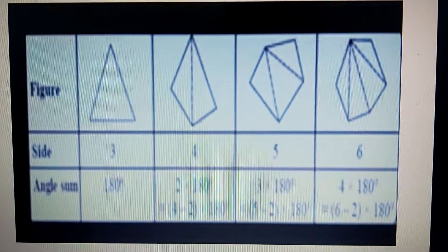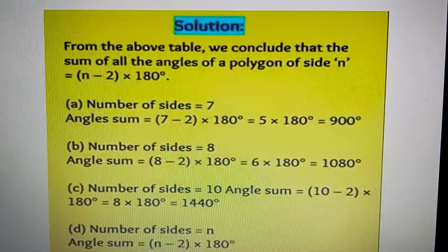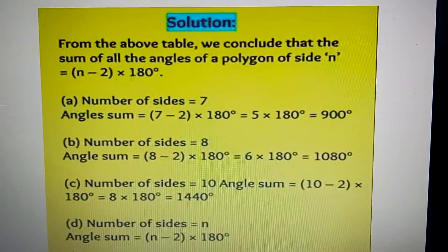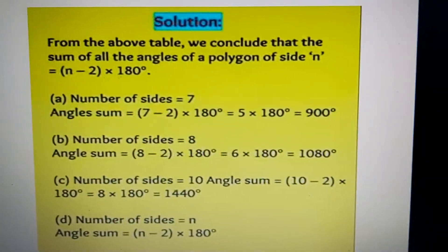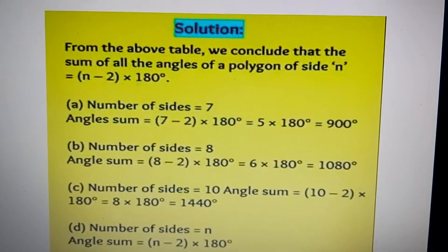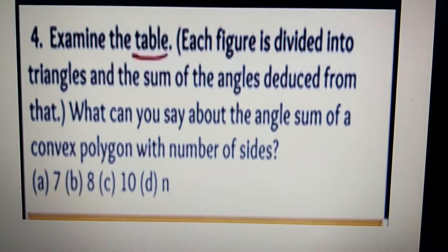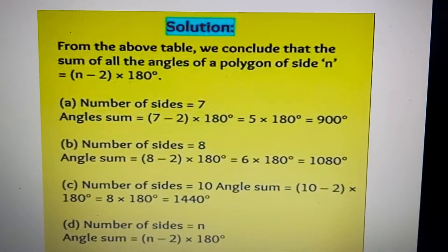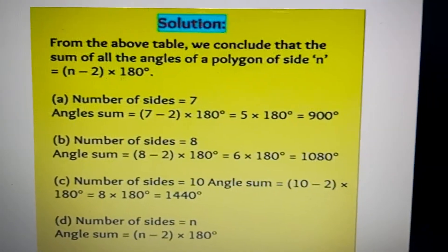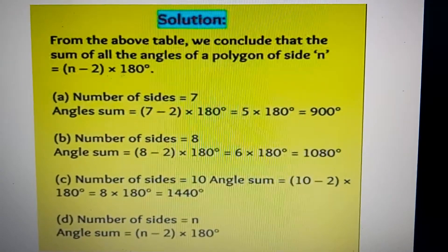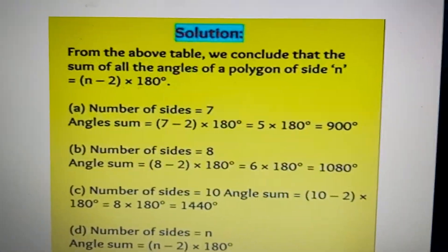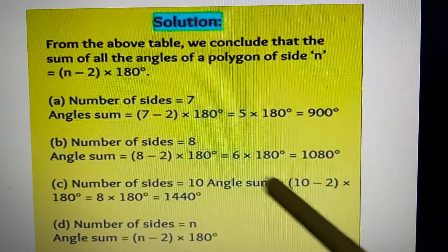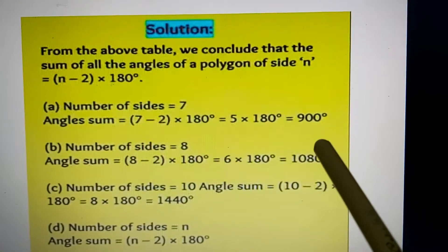This is the formula we apply. From the above table we conclude that the sum of all the angles of a polygon of side N is (N minus 2) into 180 degrees. For number of sides equal to 7: seven minus two into 180 degrees — seven minus two equals five, so five into 180 degrees equals 900 degrees.